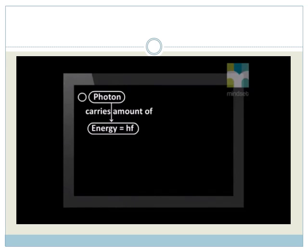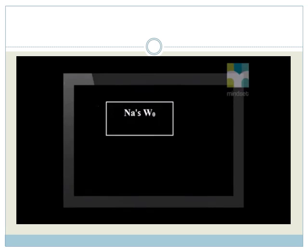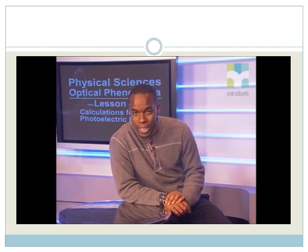A metal's work function is a specific type of energy. A metal's cut-off frequency is a specific kind of frequency. The general equation which relates a photon's energy to its frequency is E equals HF. The specific equation which relates a metal's work function to its cut-off frequency is W0 equals HF0. We found that sodium's cut-off wavelength is 5.89 nanometers, which corresponds to a cut-off frequency of 5.09 times 10 to the power 14. From this, we can calculate sodium's work function as 3.38 times 10 to the power minus 19 joules.